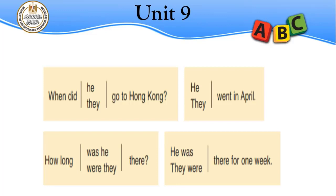When did he go to Hong Kong? He went in April. When you ask with 'when,' the answer is in the past tense — 'he went.' Now, if I want to ask about a duration or time period, I use 'how long.' How long was he there? He was there for one week.